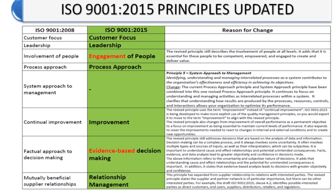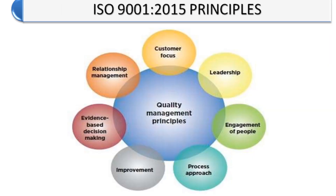The seven ISO 9001-2015 principles are: first, customer focus; second, leadership; third, engagement of people; fourth, process approach; fifth, improvement; sixth, evidence-based decision making; and seventh, relationship management. These seven principles will be covered one by one in the next lecture.